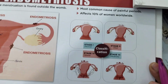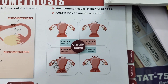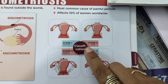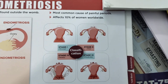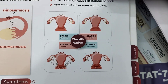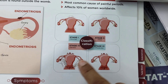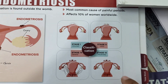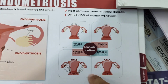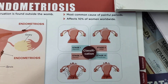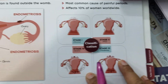Coming to its classification — stages one through four. The purpose of classification in any medical disorder is to plan the treatment. In stage one (minimal) and stage two (mild), we can go with medical management. However, in moderate to severe stages, surgery is the only cure. In severe cases, endometriosis can rarely involve the bladder as well as the bowels, and surgery must be planned accordingly.